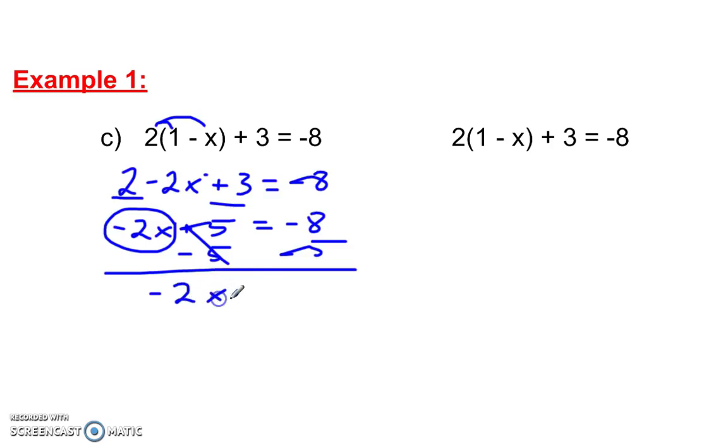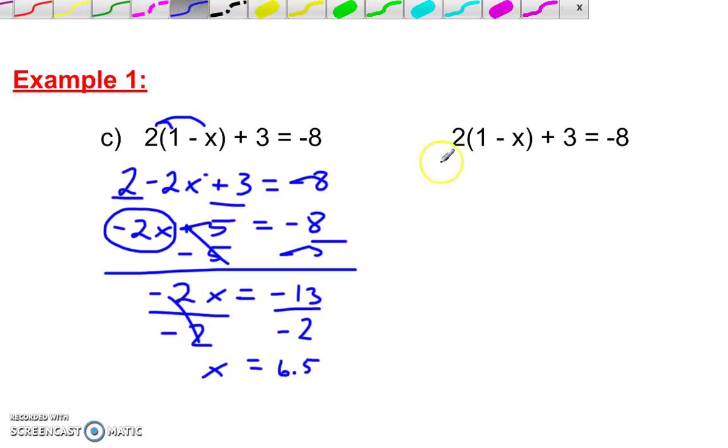Negative 2x is equal to negative 13. Divide by negative 2. And, x is equal to positive 6.5.